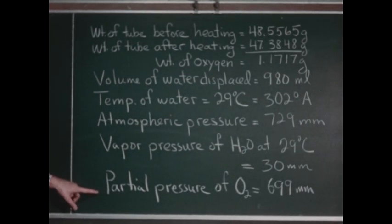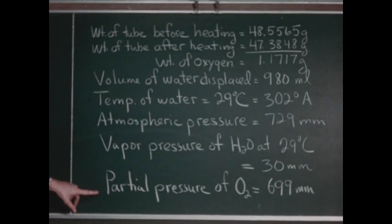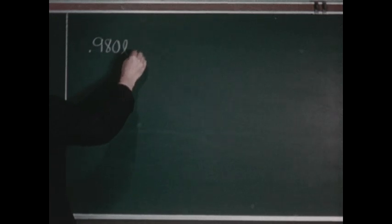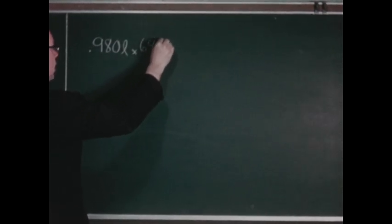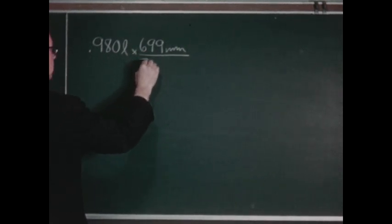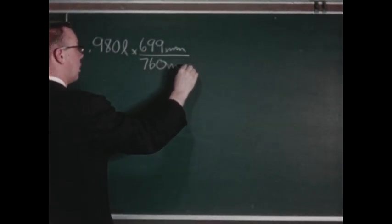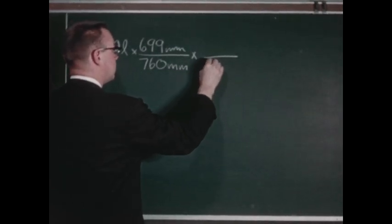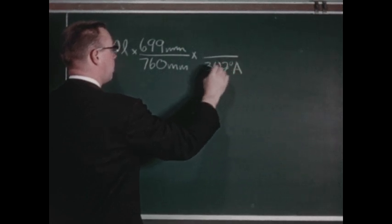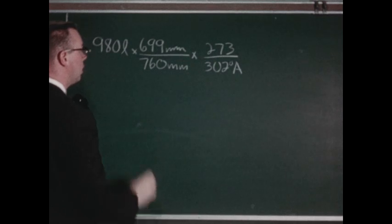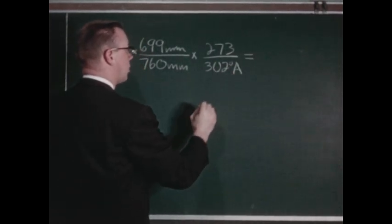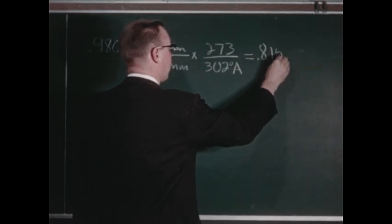We will use these figures to carry out a calculation of the weight of 22.4 liters of oxygen at standard conditions. First, we must calculate the volume that this oxygen would have occupied at standard conditions. We had 980 milliliters of oxygen, or 0.980 liters. The pressure exerted by this oxygen was 699 millimeters of mercury, which we need to correct to 760. The temperature was 302 degrees absolute, which we need to correct to 273 degrees. Carrying out this computation, we find that the corrected STP volume of the oxygen is 0.815 liters.